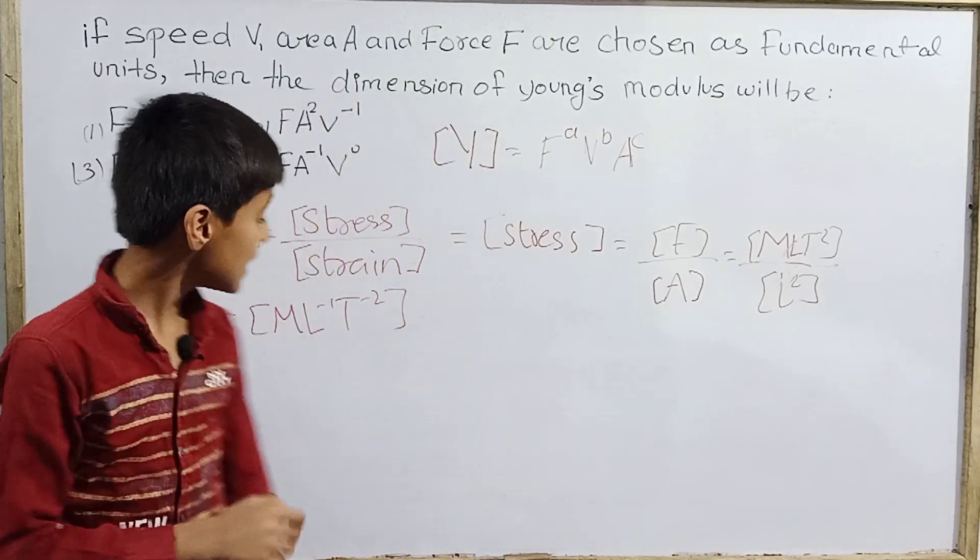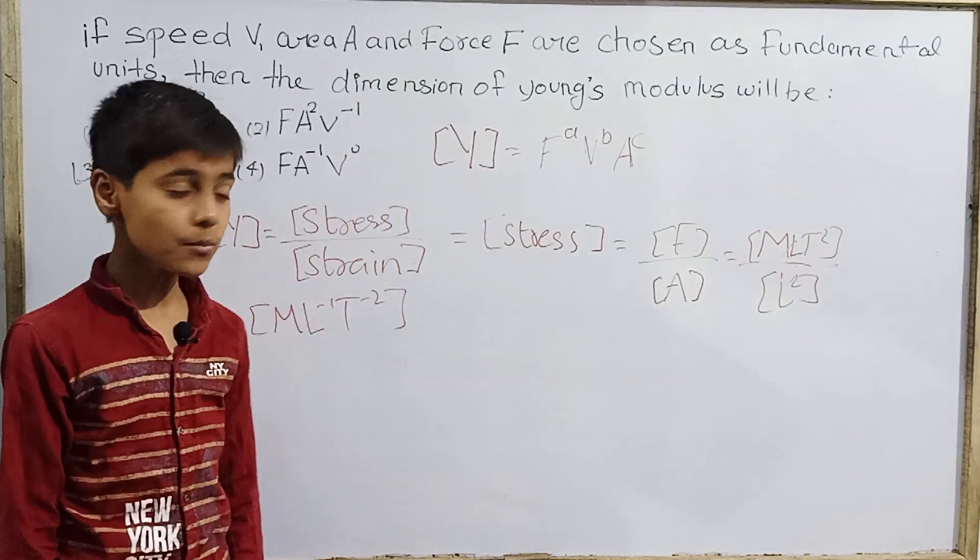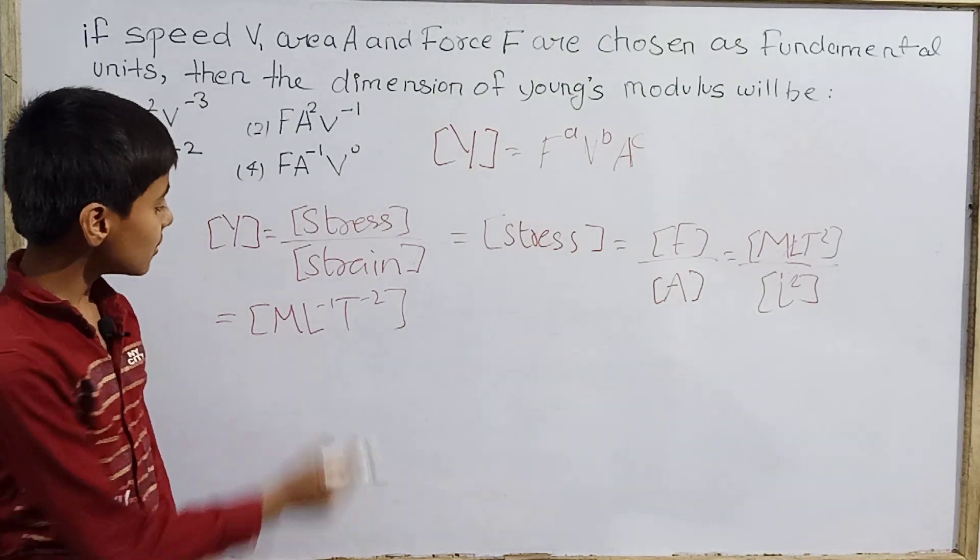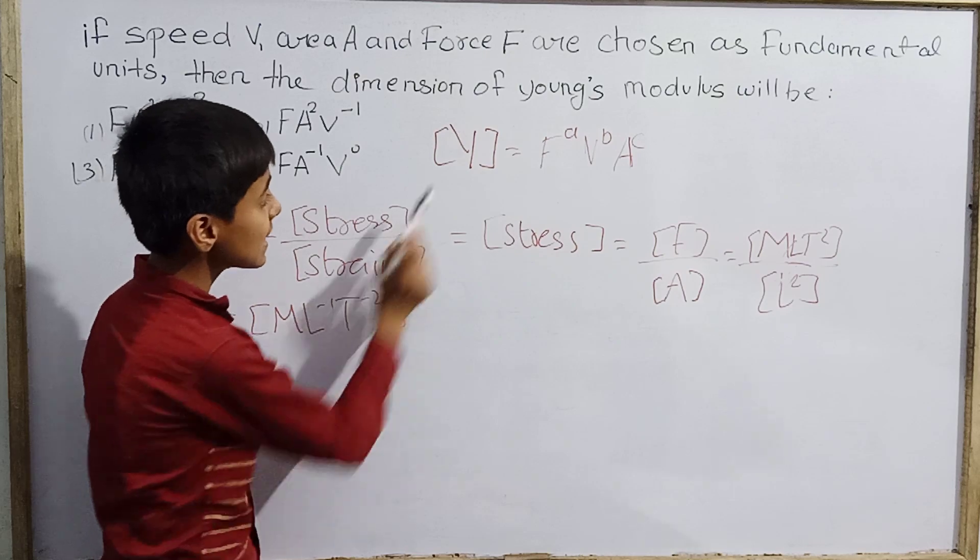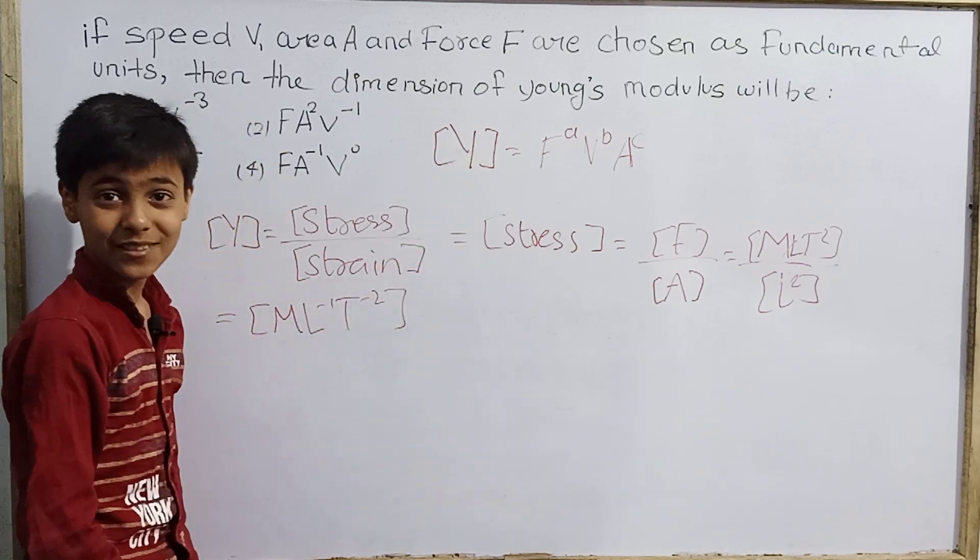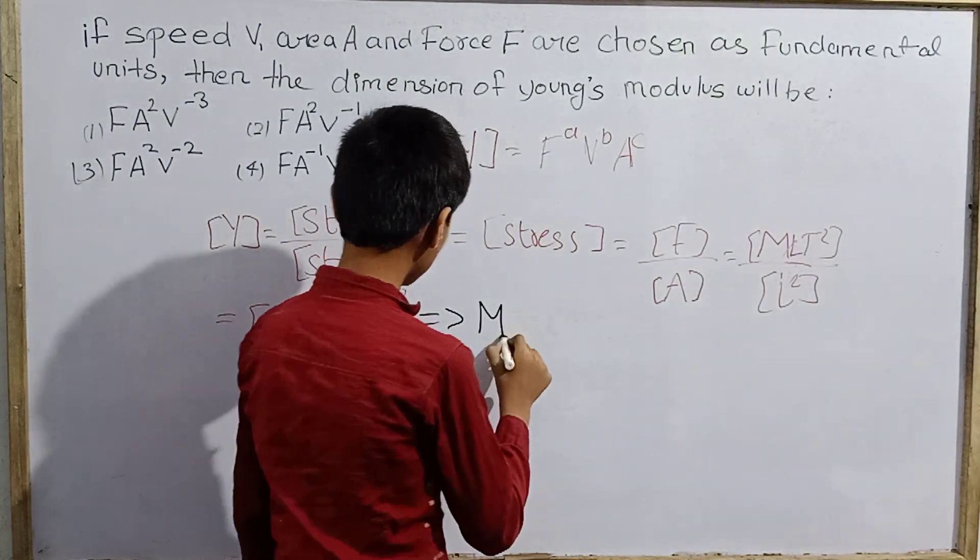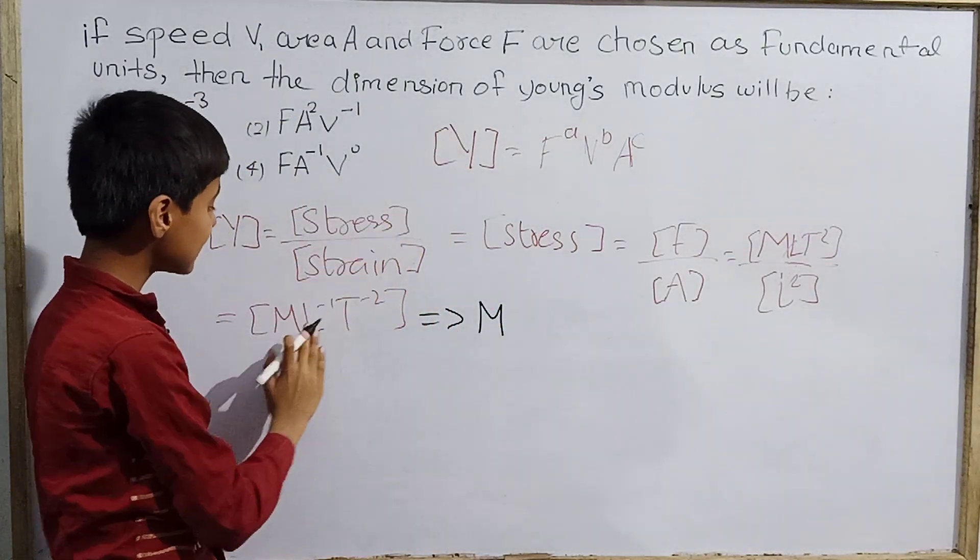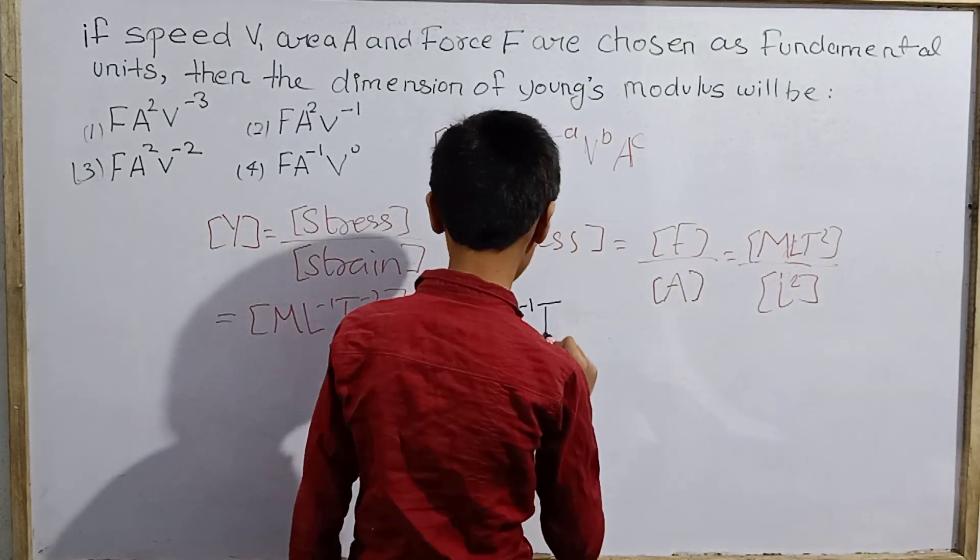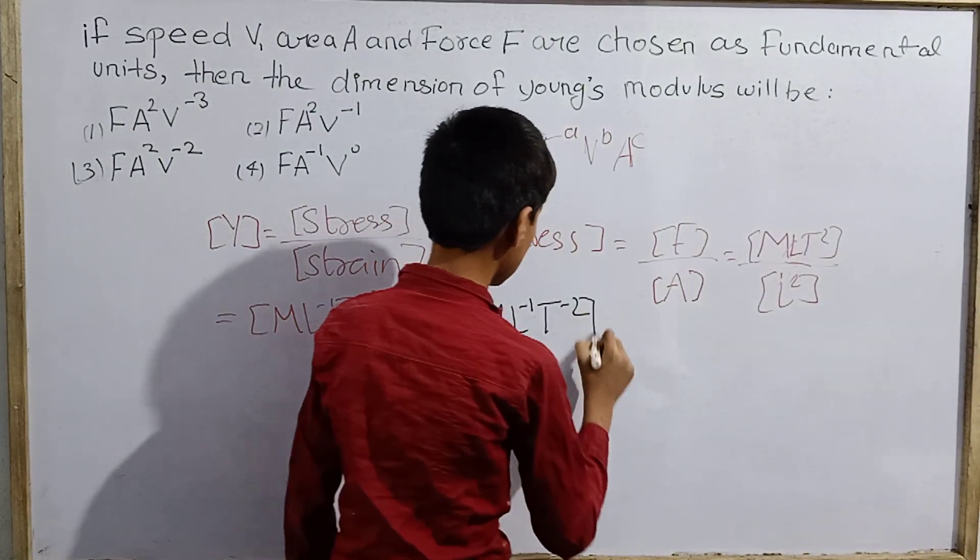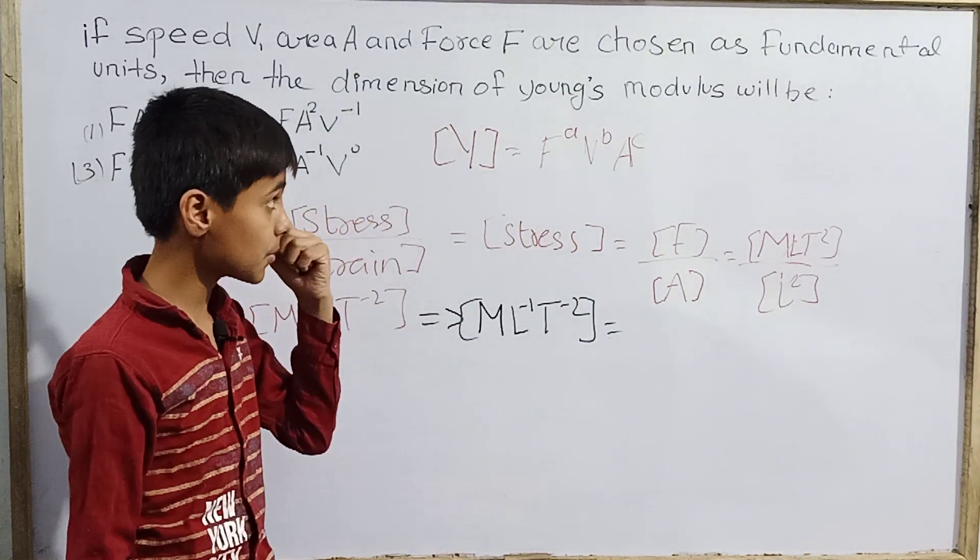It depends on the original fundamental system of units. Its dimensions are 1 in mass, minus 1 in length, and minus 2 in time. So since these are its dimensions, I can do it in place. Of course I can do it. Let's try. Young's modulus dimensions substitute. This is M L^-1 T^-2. Now who is equal? Now its dimensions in the original fundamental system of units.